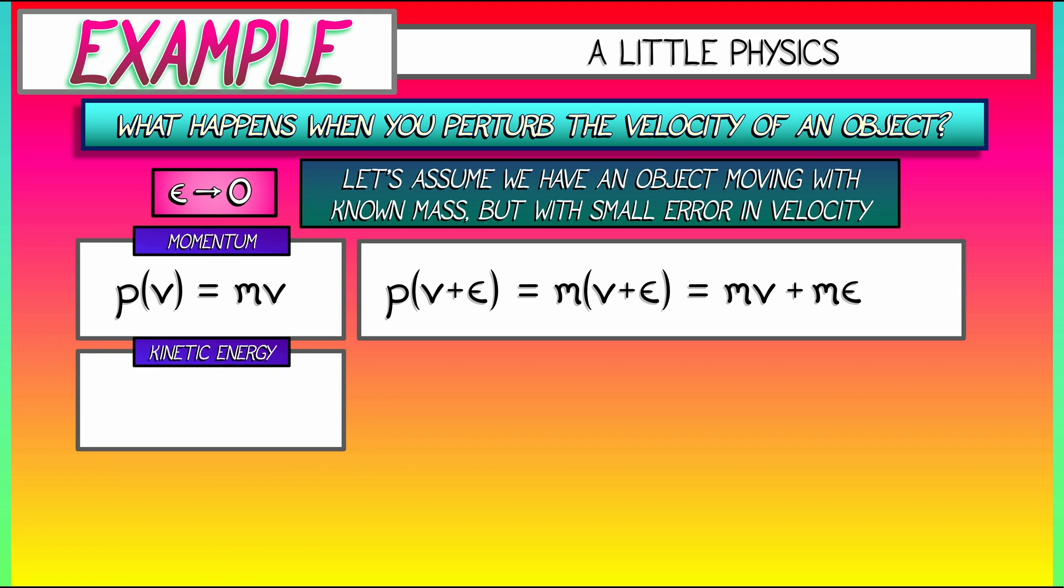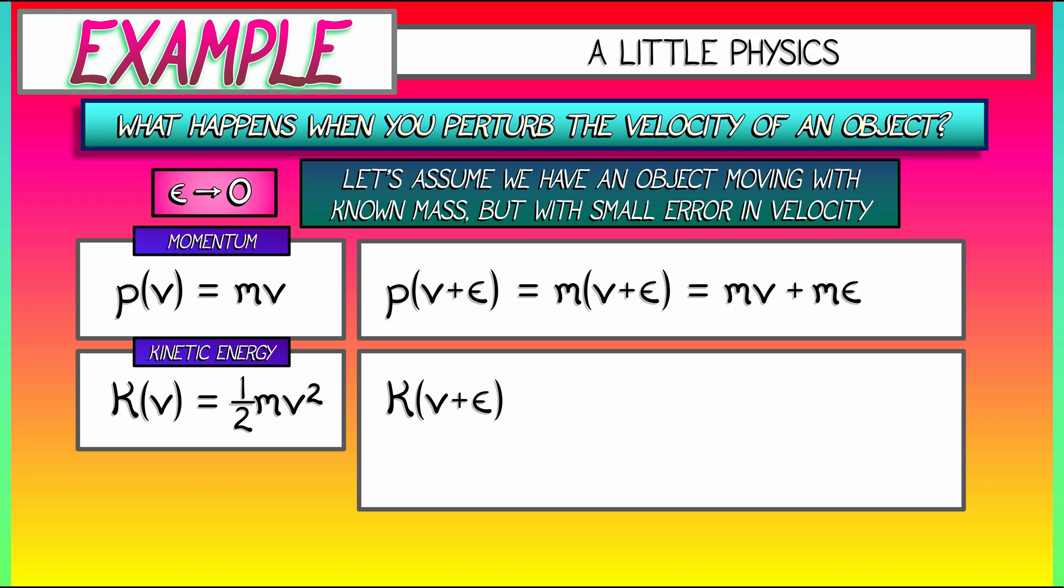But what about the kinetic energy? Recall the kinetic energy, k, is one-half mv squared. If I perturb the velocity by an amount epsilon, the kinetic energy changes as one-half m times quantity v plus epsilon squared. That's one-half mv squared, kinetic energy, plus one-half m times two times v times epsilon. That's mv times epsilon. And then the last term is big O epsilon squared.